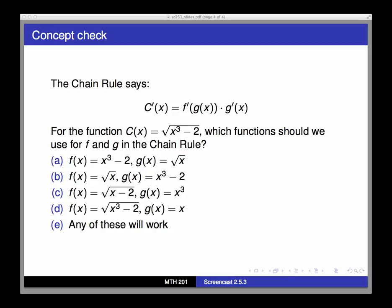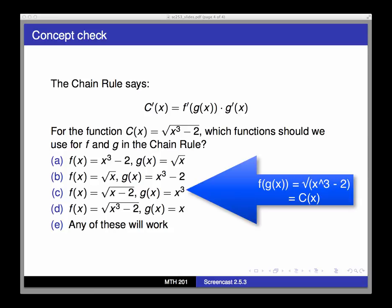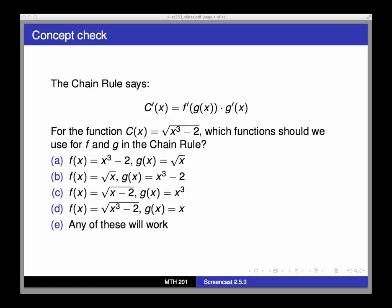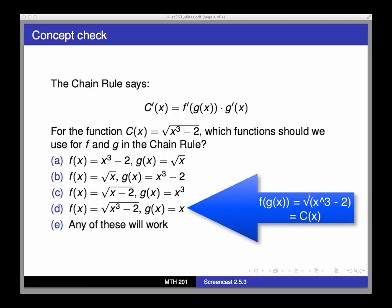So I said that earlier, if you had selected c or d in this concept check, you wouldn't have been totally wrong. Now what I mean by that is that for both choices of f and g in these two options, you do actually get a correct decomposition of the function C. And choice c, for example, f of g of x, if you compose them, would be square root of x minus 2 with x cubed plugged in for x. And that does actually give you the square root of x cubed minus 2. And this also works for choice d. So there's more than one way to decompose a composite function.